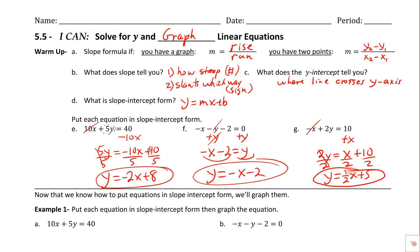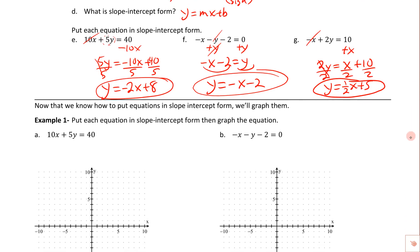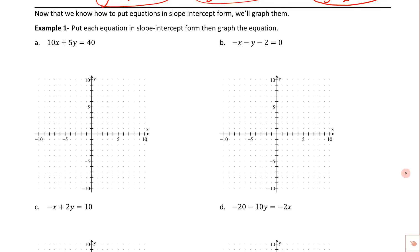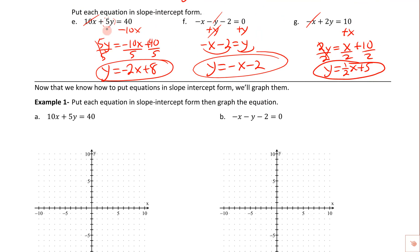So there are answers to the warm-up. If you've got those skills down, then you're in pretty good shape. Because what we're going to do now is we're going to put all of that stuff together along with some graphing. This is very similar to what your assignment is like today. It says put each equation in slope-intercept form and then graph the equation. That one looks pretty familiar, it's this problem right here. So we already did that. It's y equals negative 2x plus 8.